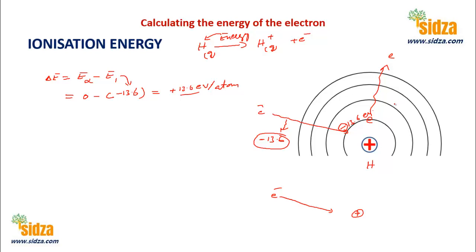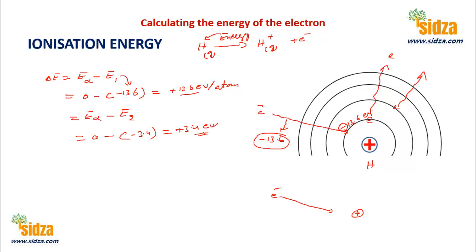Suppose we have an electron in the second shell of the hydrogen atom. The ionization energy = E∞ minus E2 = 0 minus negative 3.4 = plus 3.4 electron volts. If you want to remove the electron from the second shell of the hydrogen atom, you must supply 3.4 electron volts.